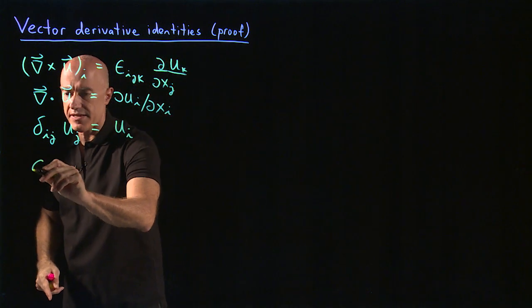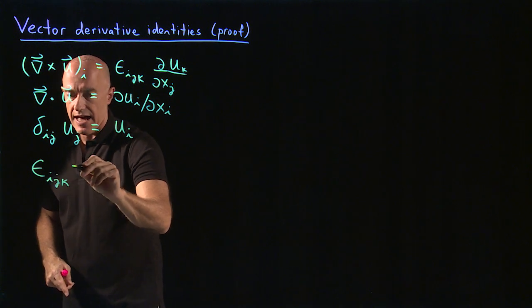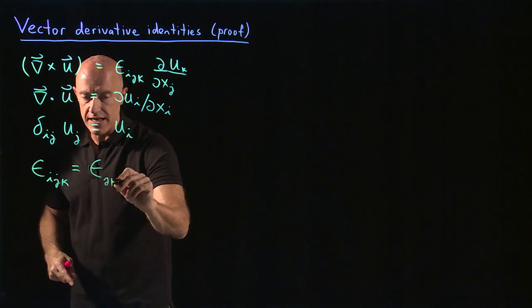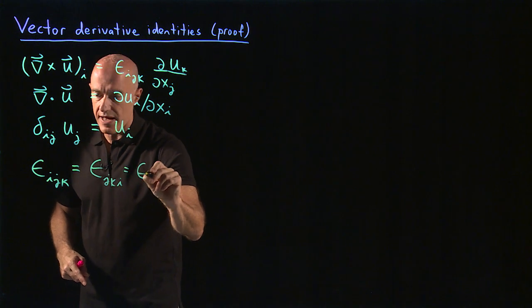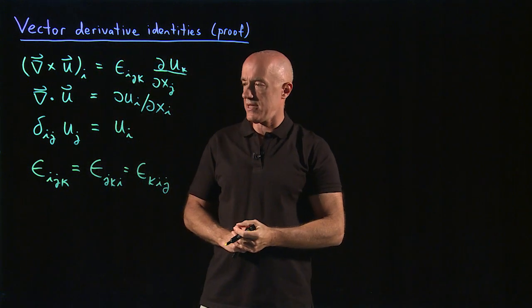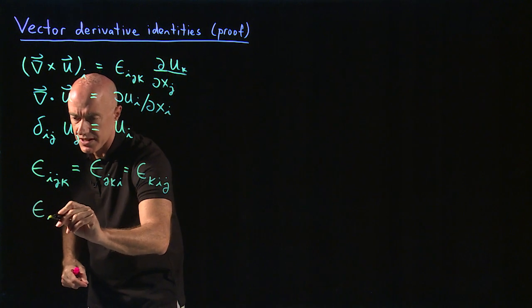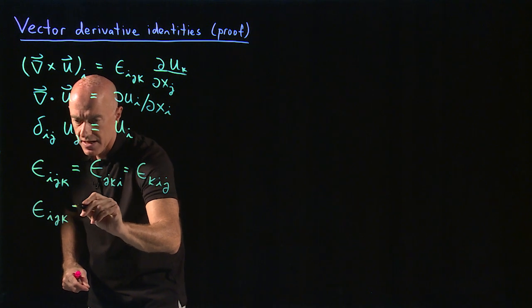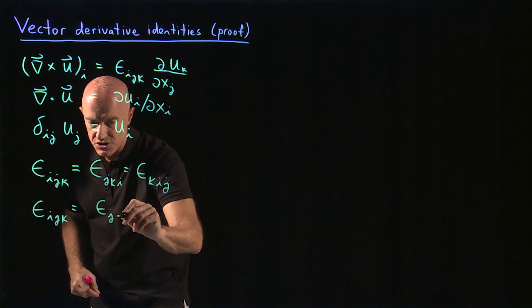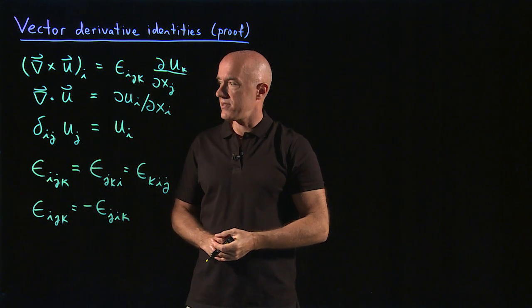These Levi-Civita tensors, you have to be able to manipulate. So they have three indices and they're cyclical, right? So epsilon_ijk is equal to epsilon_jki is equal to epsilon_kij. So sometimes you have to commute these indices. And then if you don't keep them cyclical, so epsilon_ijk, and you want to know what happens if you just switch i and j, so epsilon_jik, then you get a sign change.